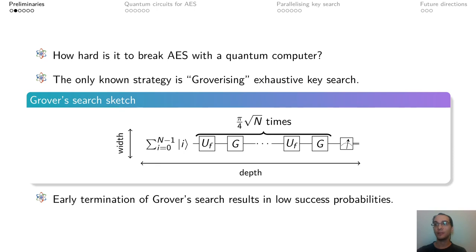A fundamental question is then how hard is it to break AES with a quantum computer? The assumption is that AES is an ideal block cipher and that there is no structural weakness that could be attacked.